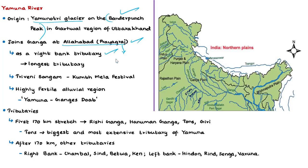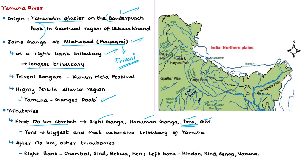This confluence is known as the Triveni Sangam, where the river creates the highly fertile alluvial Yamuna-Ganges Doab region. Yamuna is the longest tributary of River Ganga. In its first 170 km from origin, tributaries Rishi Ganga, Hanuman Ganga, Tones, and Giri join the main river — Tones being the biggest and most extensive. Other major rivers like Chambal, Sindh, Betwa, and Ken join Yamuna on its right bank, while Hindon, Rind, Senga, and Varuna join on its left bank.